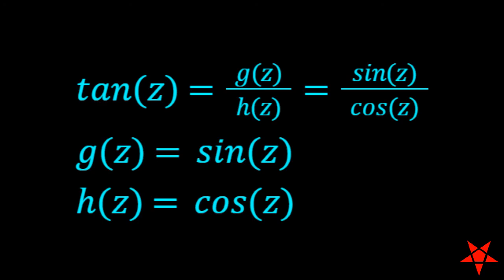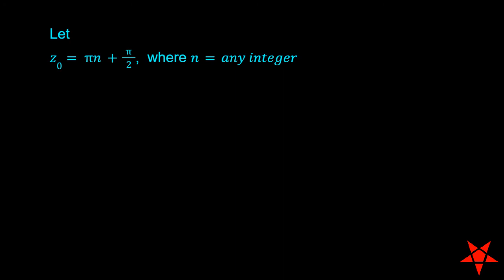Inserting z₀ equals πn + π/2 into g(z₀) gives us (-1)^n and evaluating h(z) at this same value gives us zero.